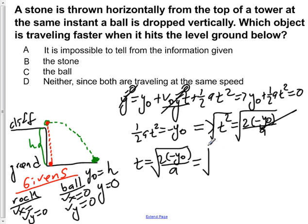If we plug in for what a is, we see that it's √(2(-y₀)/(-9.8 m/s²)). This will give us a positive number under our square root, allowing us to solve for the time.